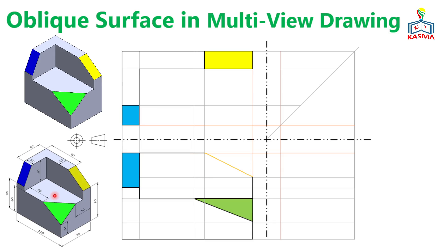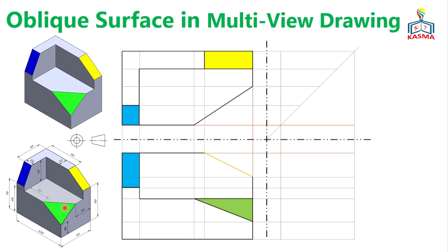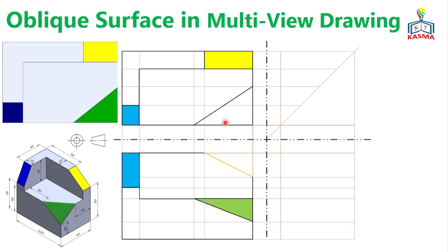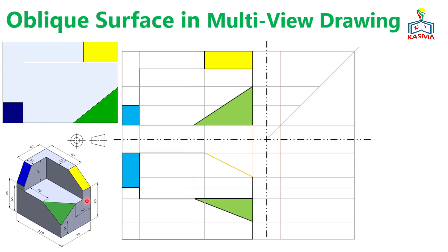Next, measure 40mm from the reference and construct a horizontal line to get the next point, then connect the lines. A previous measurement of 15mm creates a bend at that point. For the oblique surface, connecting the edges simply overlaps an existing line, so no new construction line is needed. The result is a horizontal line from one point and a vertical line from another, giving a triangular shape for the oblique surface on the top view.